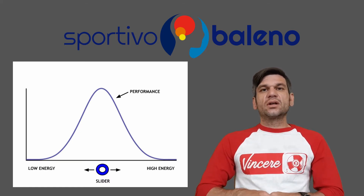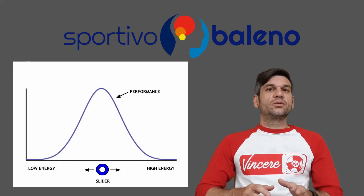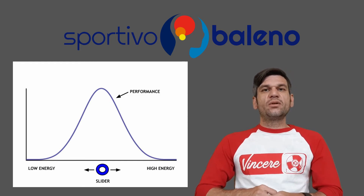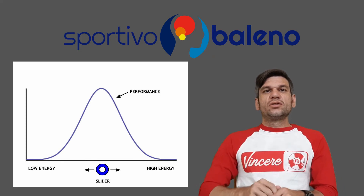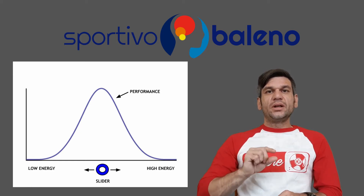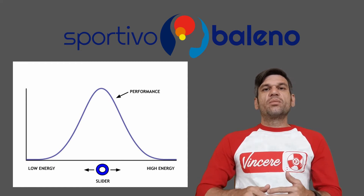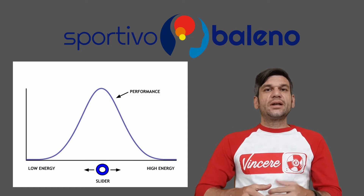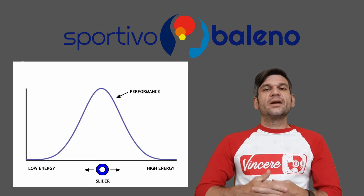Your performance should be at its highest level based on the energy you need in that moment — keeping in mind context, because one sport is going to be different than another, and one individual is going to be different than another. We also need to imagine there's a slider on the bottom of that graph, so we can change our energy from low to medium to high and back, to perform at our highest level during different moments.